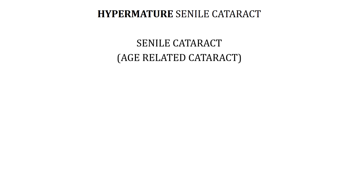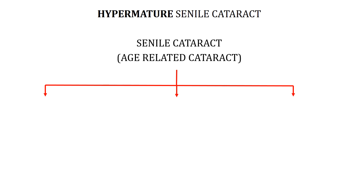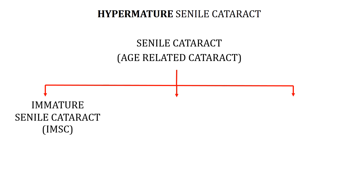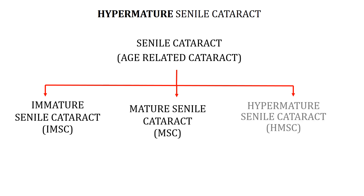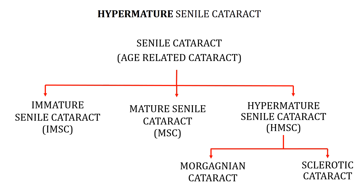Morgagnian cataract is a type of hypermature senile cataract. Senile cataract refers to an age-related cataract — broadly speaking, any cataract that develops after 45 years of age. A senile cataract can be of three types: immature senile cataract (IMSC), mature senile cataract (MSC), and hypermature senile cataract (HMSC). Hypermature senile cataract can further be divided into two types: Morgagnian cataract and sclerotic cataract. In this video we will restrict our discussion to Morgagnian cataract.